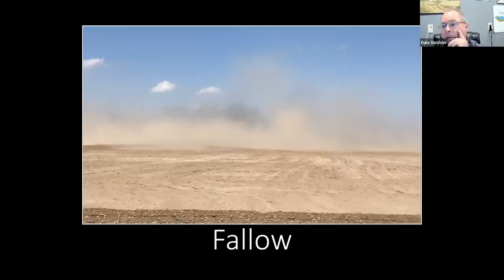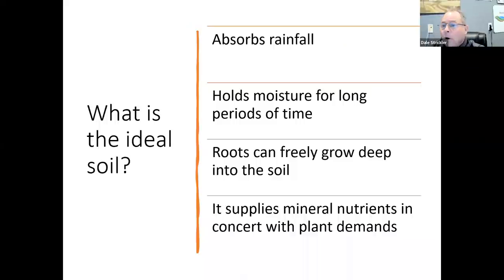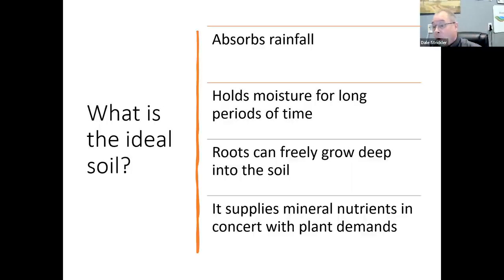So if we're going to restore soil, what's our goal? What kind of soil would be ideal? What kind of soil are we striving for? It would absorb rainfall. We want it to hold moisture for a long period of time. We want roots to be able to grow into it very deeply, and we want it to supply mineral nutrients when the plant needs it, in the quantities that the plant needs.